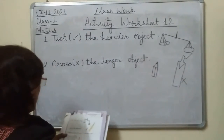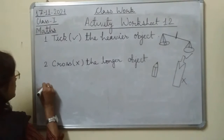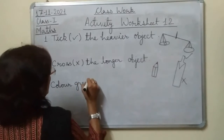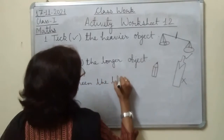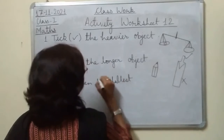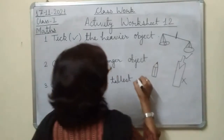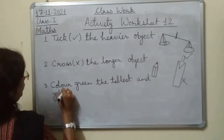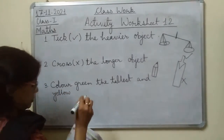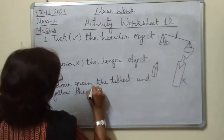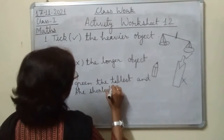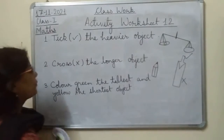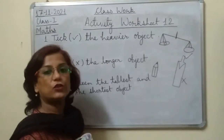The third question is: color green the tallest, and color yellow the shortest object. So you have to color the tallest object green and the shortest object yellow.